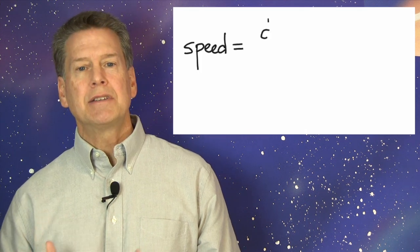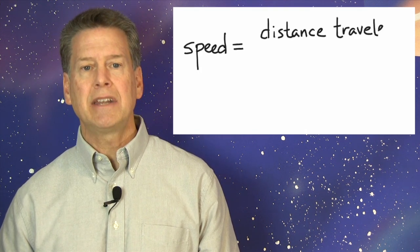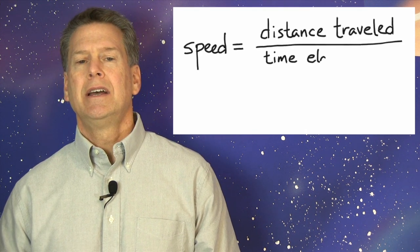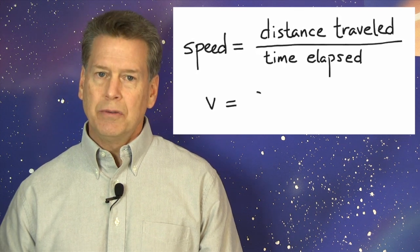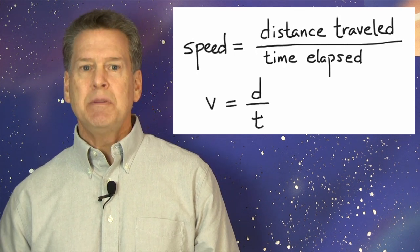So again, speed is distance divided by time. V equals D over T. Since we measure distance in meters, and time in seconds, the equation tells us that the units of speed must be meters divided by seconds, meters per second. We treat the units just as if they were numbers and plug them into the equation.